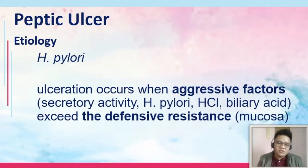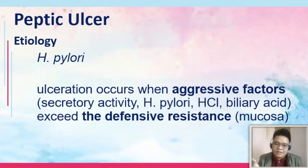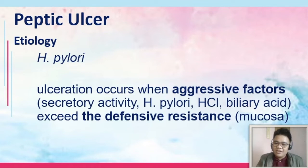When we talk about peptic ulcer, its etiology goes back the same as gastritis. The main etiology is H. pylori. Ulceration occurs when the aggressive factors exceed the defensive resistance. The problem in peptic ulcer disease is that aggressive factors — including secretion of hydrochloric acid, pepsin, H. pylori, and biliary acid — exceed the defensive resistance, causing the ulcer to occur.